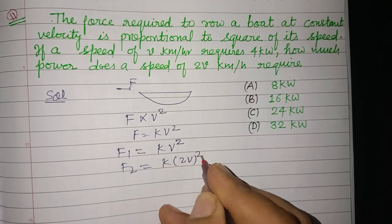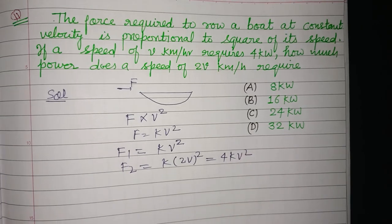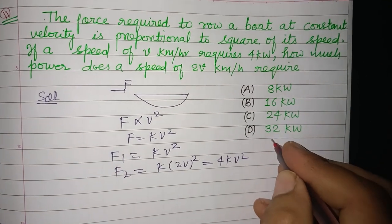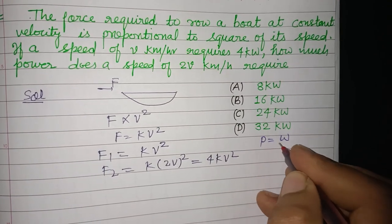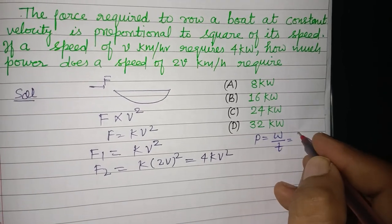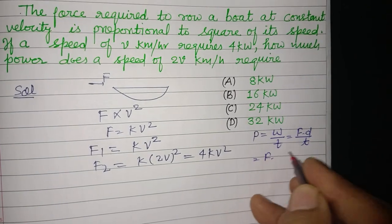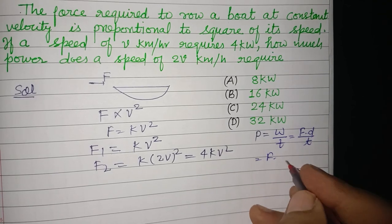Now we know that power equals work upon time, W/T. This is F times D upon T. Since displacement upon time is velocity, we get P equals F times V.